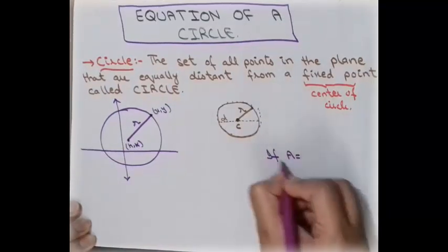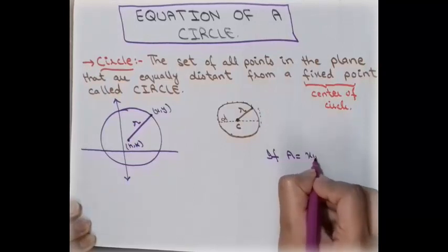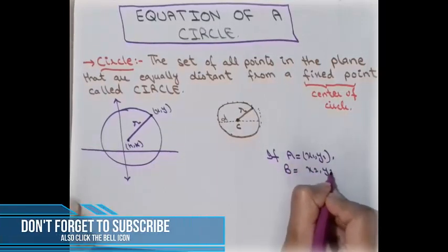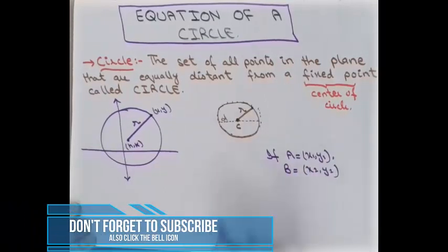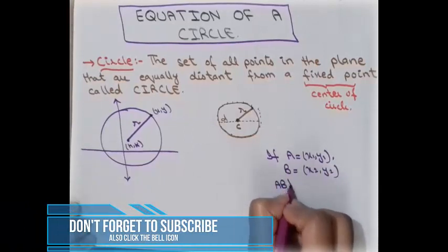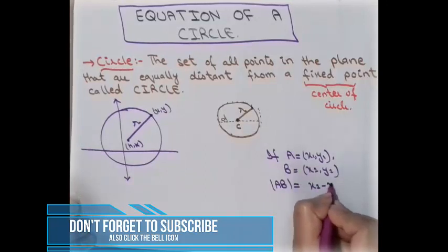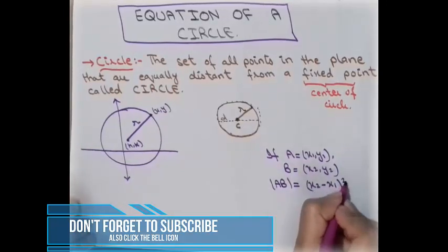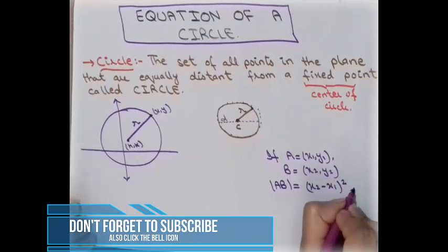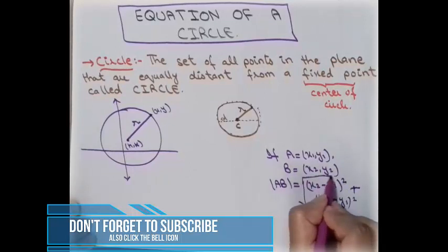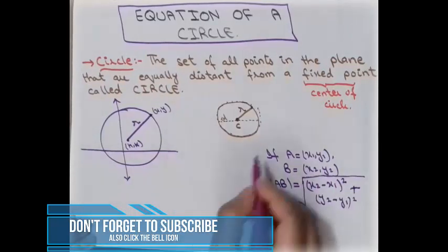The distance formula: if we have point A with coordinates (x₁, y₁) and point B with coordinates (x₂, y₂), then the distance between these two points is calculated as the square root of (x₂ − x₁)² plus (y₂ − y₁)².